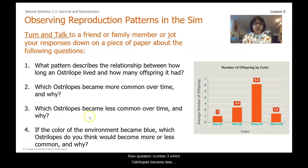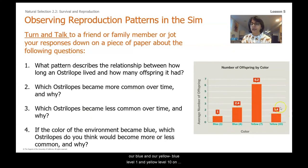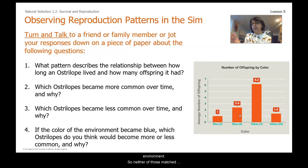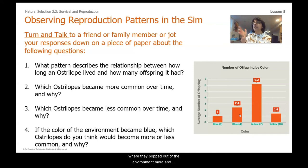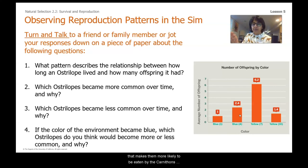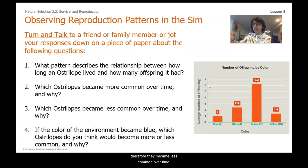Question three — which australobes became less common over time and why? Blue level one and yellow level ten on those two extremes became less common because they stood out more in the environment. Neither matched the environment well — blue four didn't either, but to a lesser extent. Blue one and yellow ten both popped out of the environment more, and because they could not blend in, they were more likely to be eaten by the carnathons and therefore less able to reproduce, becoming less common over time.